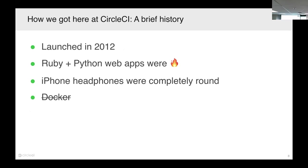So how do we end up in this place? CircleCI was founded in 2012. Things were a little different back then — Ruby and Python apps were lit. We wouldn't have called them that in 2012. We were super stoked about monoliths, hadn't headed down the path of microservices, Docker was nowhere to be found, and iPhone headphones were totally round. I mean, they're still crap, but they were crappy and round back then.